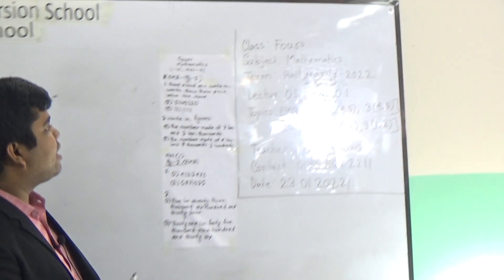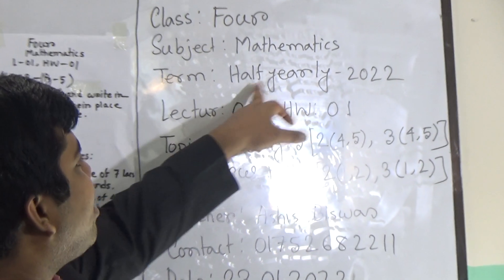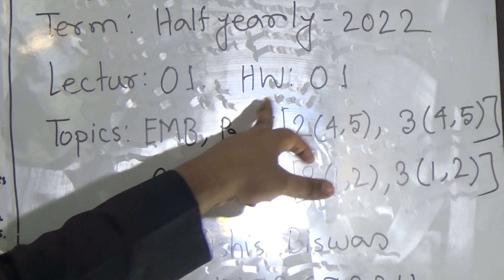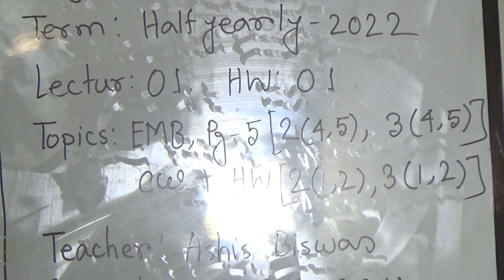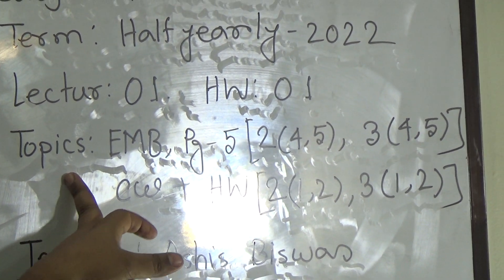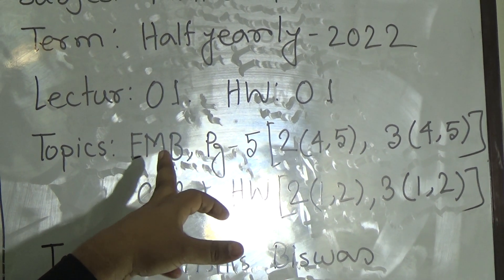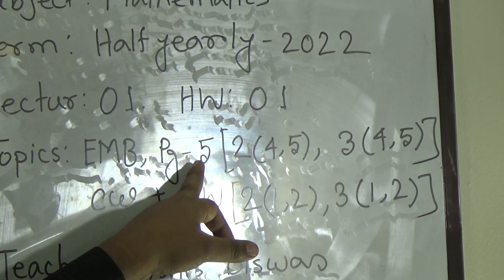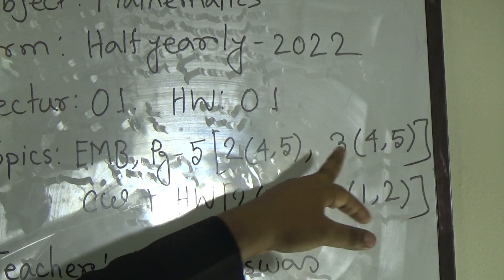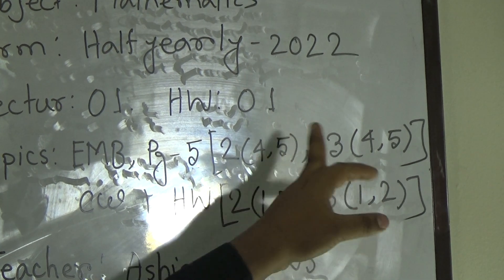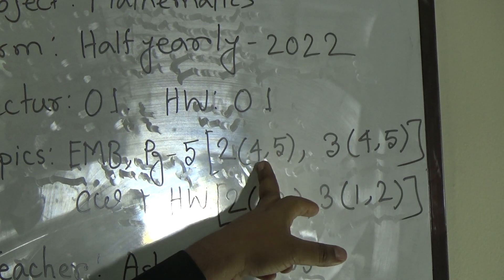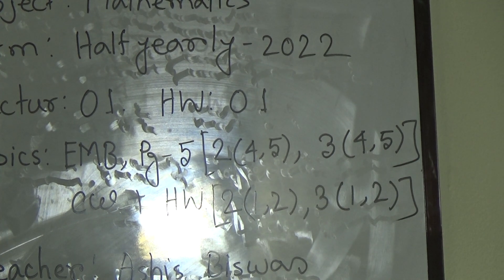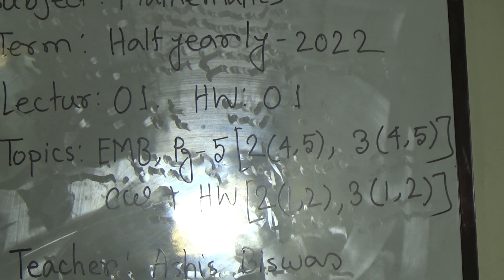Dear student, today is our lecture number 1 of half-yearly examination and today's HW number 1 also. Our today's topic is from your EMB book, page number 5. From page number 5, we have to solve questions 2 and 3. From question 2, we shall solve 4 and 5, and from 3 we shall solve 4 and 5 as your CW.